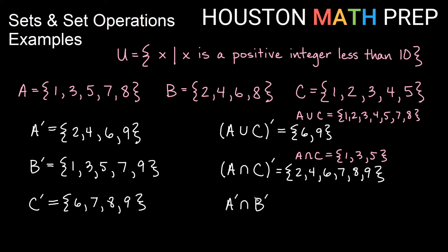Here we find A complement and B complement separately and then take the intersection. We already have those written: A complement is {2, 4, 6, 9} and B complement is {1, 3, 5, 7, 9}. We want the intersection — all elements in both lists. The only thing in both lists is the element 9. So A complement intersect B complement is just {9}.